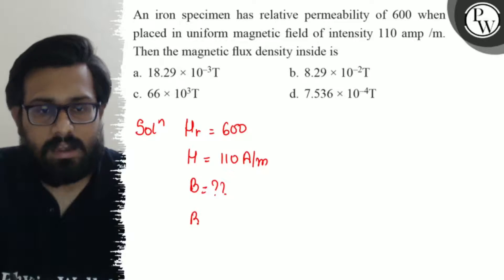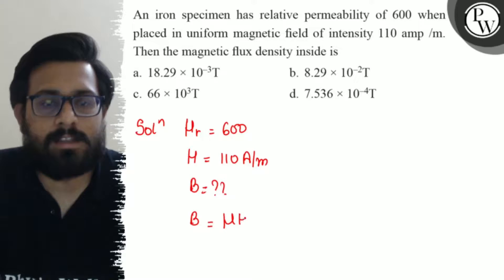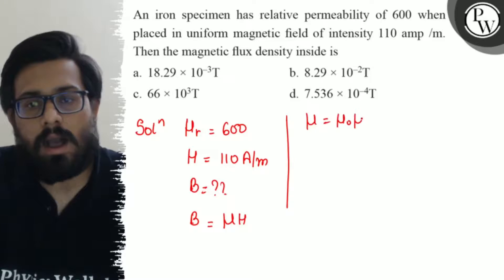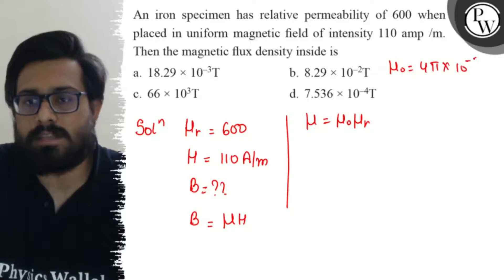We know the relation that B equals mu into H, and mu can be written as mu naught into mu r. The value of mu naught we all know is 4 pi into 10 to the power minus 7.